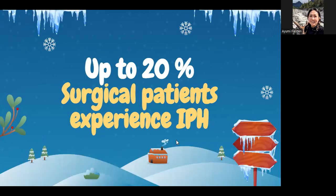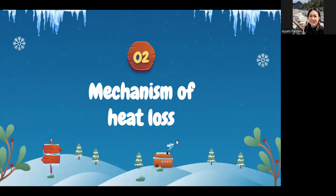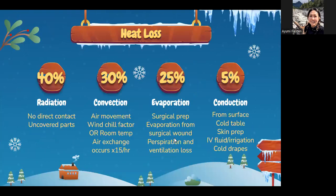According to research, up to 20% of surgical patients experience unplanned hypothermia. How do they lose heat? This often appears in CPAN questions. 40% of heat is lost through radiation — that is your uncovered body parts. Think about a big belly case where we can't cover the patient with warming blankets. Think about babies whose head is about 50% of their body surface area — if you don't cover their head, they lose heat through radiation.